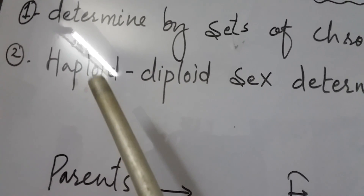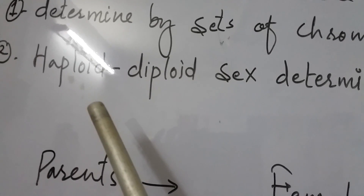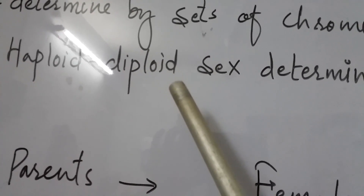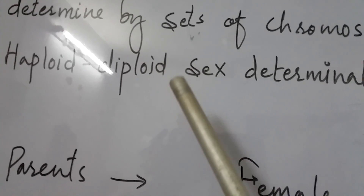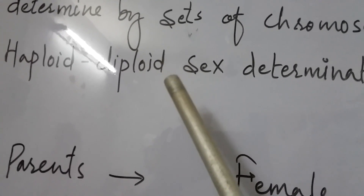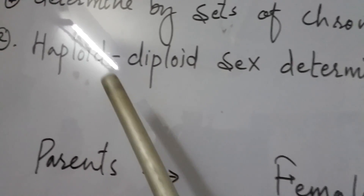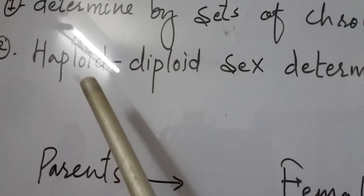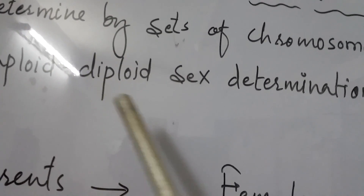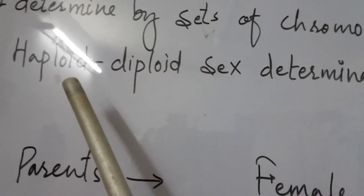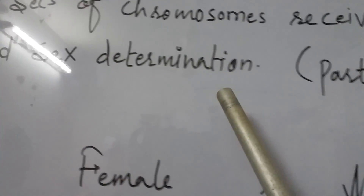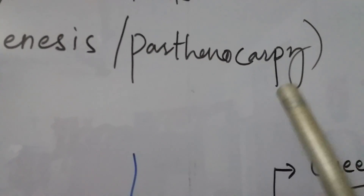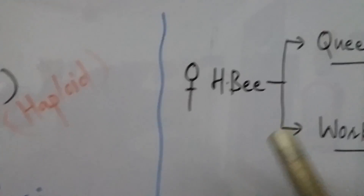In the honeybee, the female consists of the full number of chromosomes, that is 32, and the male consists of half that number, which is 16. So the male is known as haploid and the female is known as diploid. This pattern of gender determination is known as haploid-diploid type of sex determination, also known as parthenogenesis.